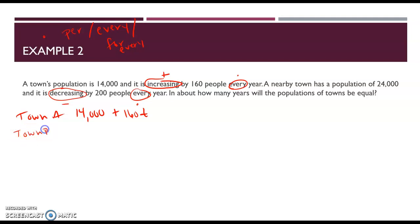That's town A. And then town B, we are starting at 24,000 people. Sorry, I wasn't watching where I was writing as I started to write. Decreasing, so we'll be minus 200 people every year. So also T for year. Now, so those are my two expressions. Now we're just going to, I want to know when they're equal. So we're going to set them equal to each other.